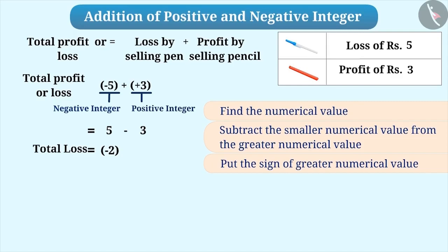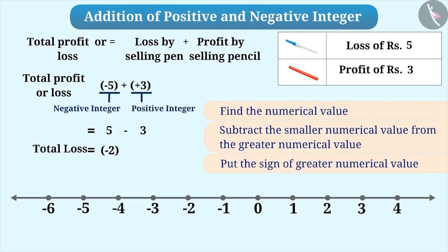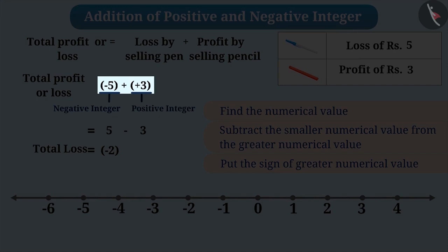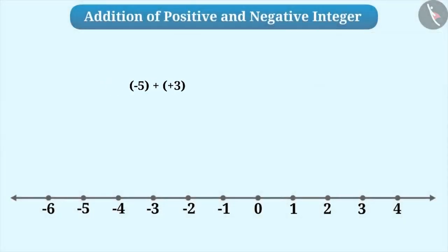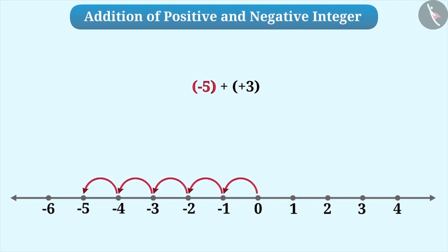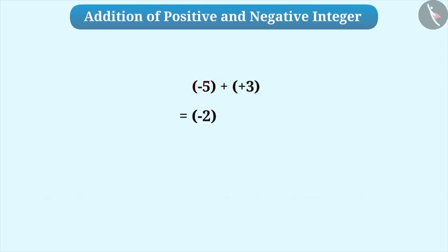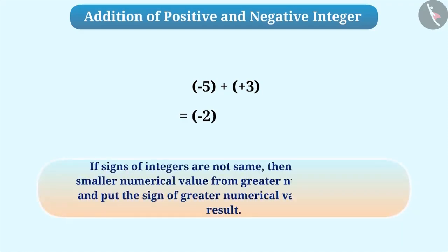The addition of a negative integer and a positive integer can also be represented on the number line. Let's understand it with the example of minus 5 plus plus 3. First, draw a number line of integers. Here, minus 5 is the first integer which is a negative number. Therefore, we move 5 places to the left of 0. By doing so, we reach minus 5. Now the second integer is plus 3. Since it is a positive integer, we move 3 places to the right of minus 5. Thus, we reach minus 2, which is the result of minus 5 plus plus 3. Now you must have understood that if the signs of integers are not the same, then we will subtract the smaller numerical value from the greater numerical value and then put the sign of the greater numerical value before the result.